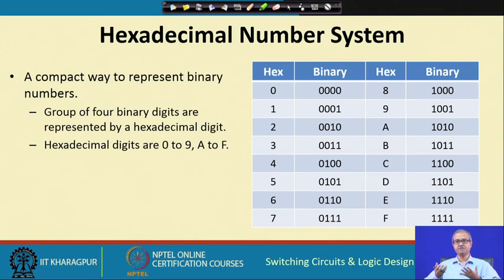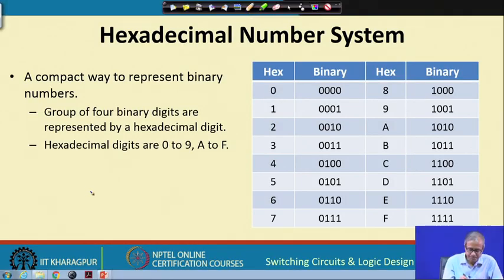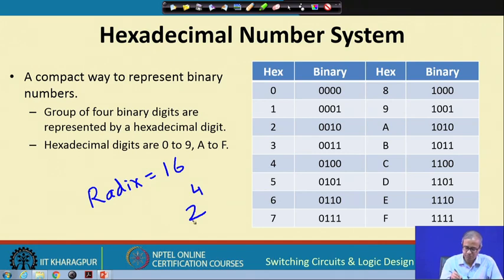Now let us come to hexadecimal, which is one step further: octal has radix 8, hexadecimal has radix 16. In octal we grouped 3 binary digits to form one octal digit; now we group 4 binary digits or bits to form one hexadecimal digit, so hexadecimal is even more compact. The 16 digits of hexadecimal are defined as follows: the first ten are 0 to 9, and the last six are A, B, C, D, E, F.